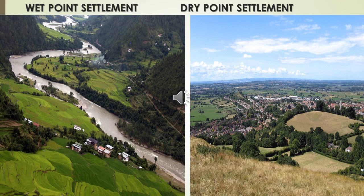Wet pine settlement means settlement located near water sources in an arid region. Dry pine settlement means located in low-lying areas in regions of excessive dampness. Dry pine settlements are not affected by flood or any other source of water because they lie on higher ground. Such dry pine settlements are found in the coastal plains of Kerala and deltas along the east coast of India.